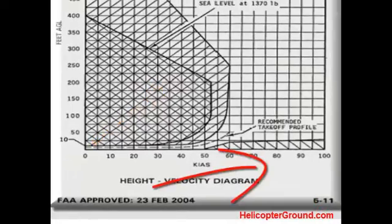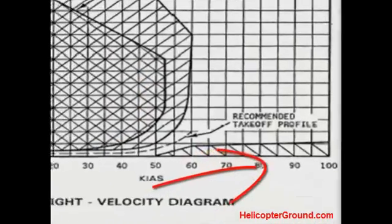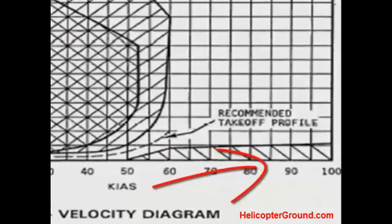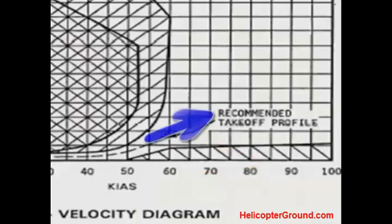And again, the lower shaded area, if you're going fast and you're close to the ground, when that engine quits, you're going to descend quickly and hit the ground. So you need that altitude with that higher speed so that you can flare and safely land the helicopter.